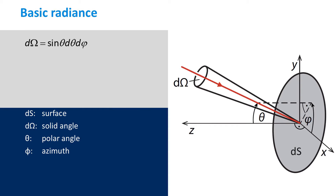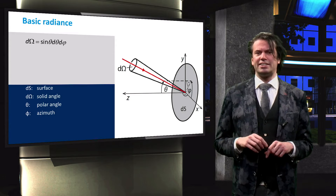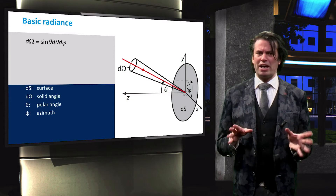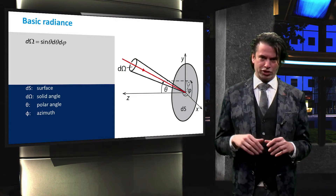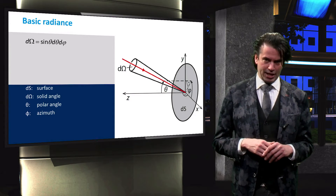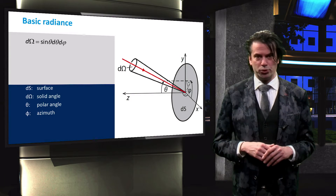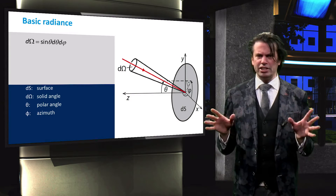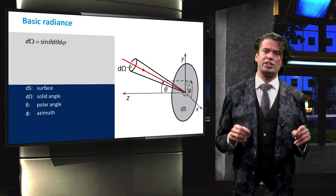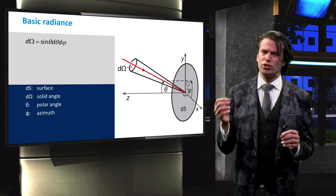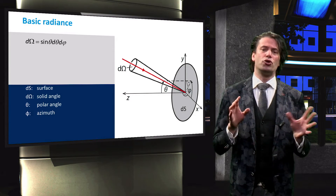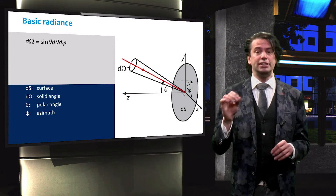We parameterize these directions with the spherical coordinates theta and phi. The polar angle theta is defined with respect to the normal of the surface element ds. Phi is the azimuth. With these spherical coordinates, we can define the solid angle of incidence, denoted by d omega.